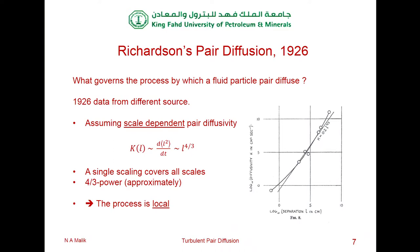Why should the pair diffusivity be scale-dependent? It's not that difficult to see. If you have a very small separation of particles, the energy at that scale is small, so the rate of separation is small. But if pair separation is larger, you have bigger energy-containing eddies. So it's not unreasonable to hypothesize that the pair diffusivity should be an increasing function of separation.